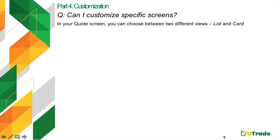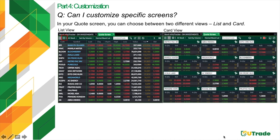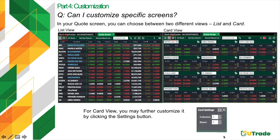In your quote screen, you have two different view types: List and Card. By default, the screen is in list view. To choose card view, click the button next to the list button. You can further customize your card view by clicking the settings button to increase or decrease columns and rows. Don't forget to click the disk button to save your changes. That ends part 4 of our presentation.